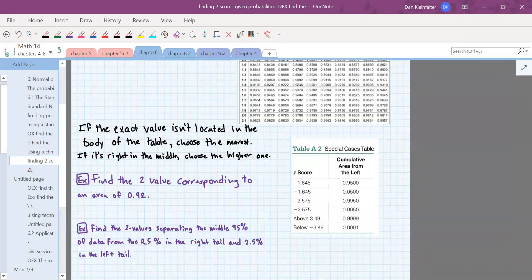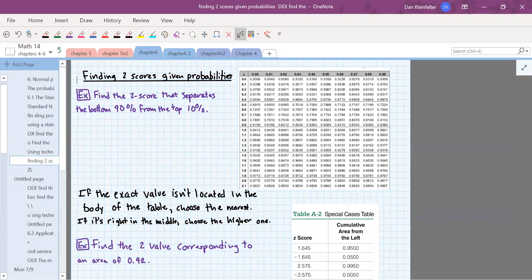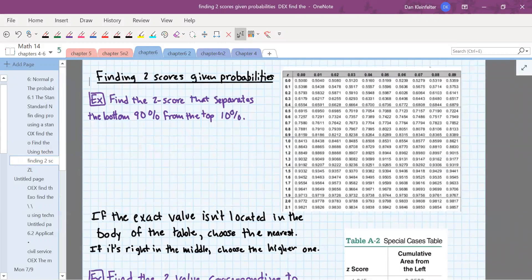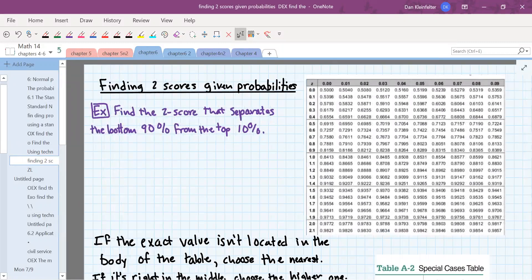All right, so we're almost there for the day. So this next part we're going to reverse the procedure that we had just a few moments ago. What we were doing was given a Z value, how do you get a probability? What we're going to do on this slide is the opposite. How do you find the Z score if you know the probability?